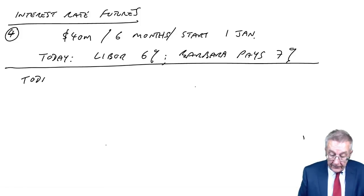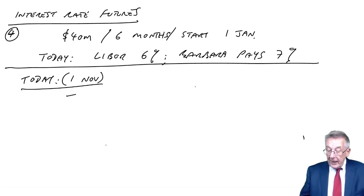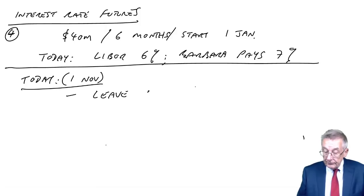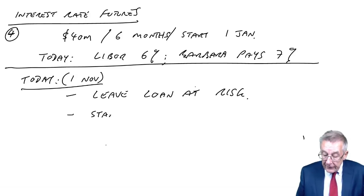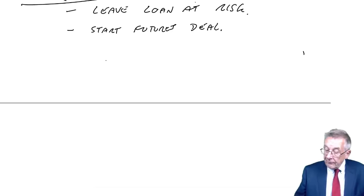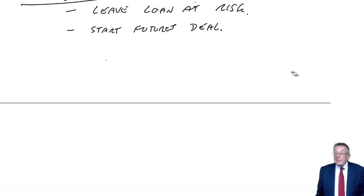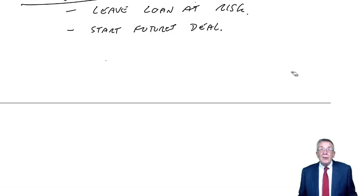So let's start going through it. First of all, as of today, which is 1st of November, remember the loan itself we leave the loan at risk. We'll show what happens shortly. For the loan we'll pay whatever the interest happens to be. To cancel that risk, as of today we'll start a futures deal. We need to write down what the futures deal is going to be.